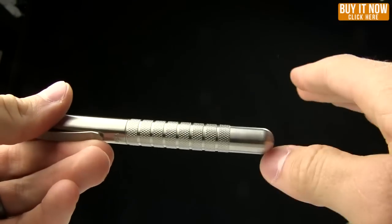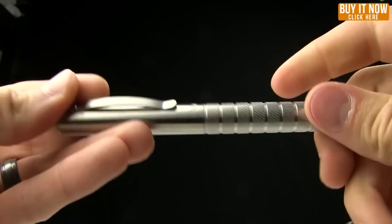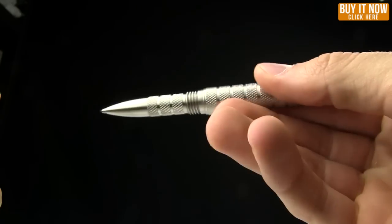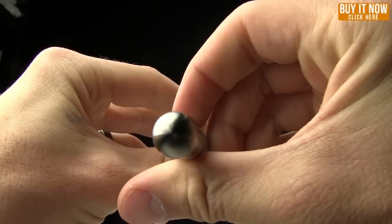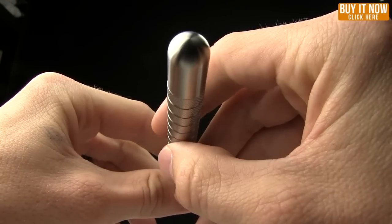So length on all of these is exactly the same. You've got length with cap is 5.3 inches. And then length without the cap is 4.7 inches. Diameter on these is 0.49 inches. So just under half an inch.